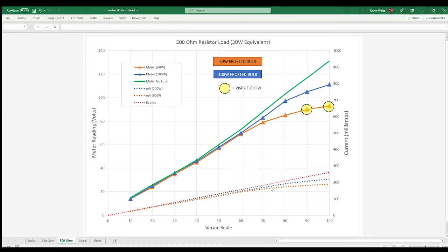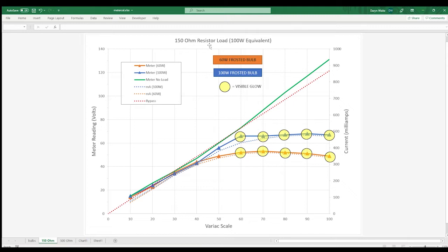The second graph is the same as the first except now I'm running the experiment with a 150 ohm resistor which is mimicking a 100 watt DUT. And not surprisingly the effects are more dramatic with this higher wattage load. Notice that we start to see divergence around 30 volts.